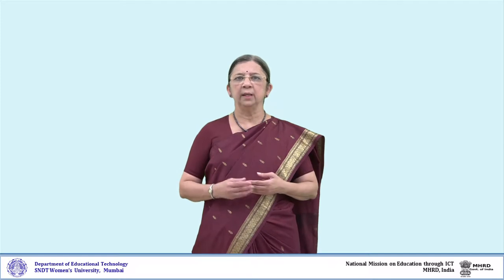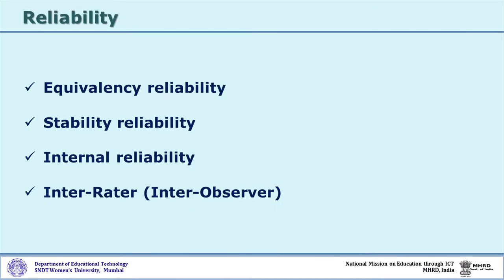Reliability has four types. These are equivalency reliability, stability reliability, internal reliability, and inter-rater or inter-observer reliability. Let us see each one of them in detail.